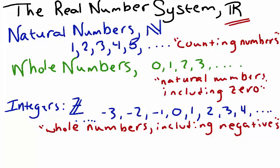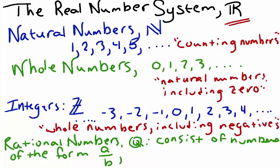The next subset of the real number system is the rational numbers, often represented by the letter Q. The rational numbers consist of numbers of the form A over B, where A and B are integers. We can say A and B are elements of Z, and B is not equal to zero.